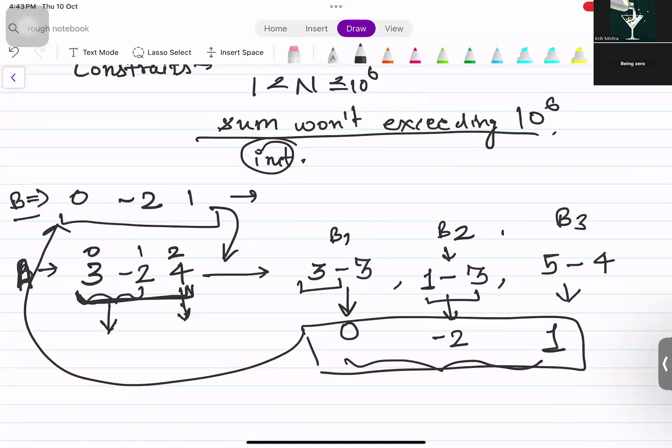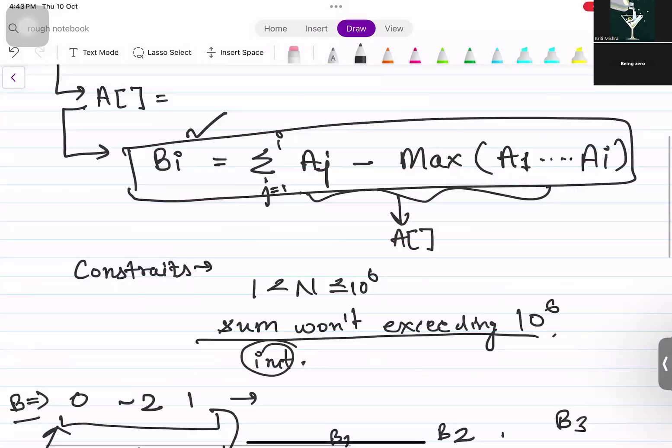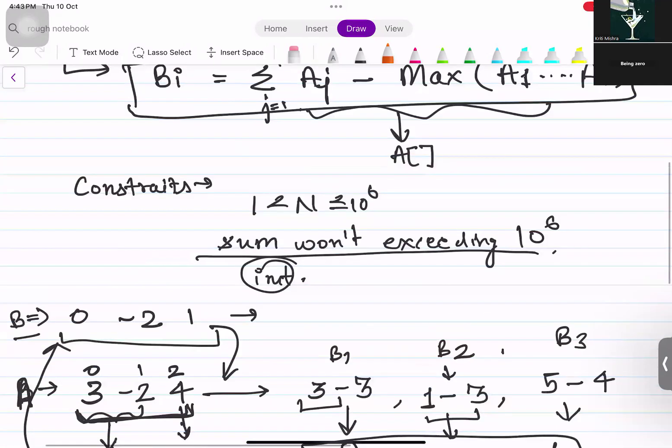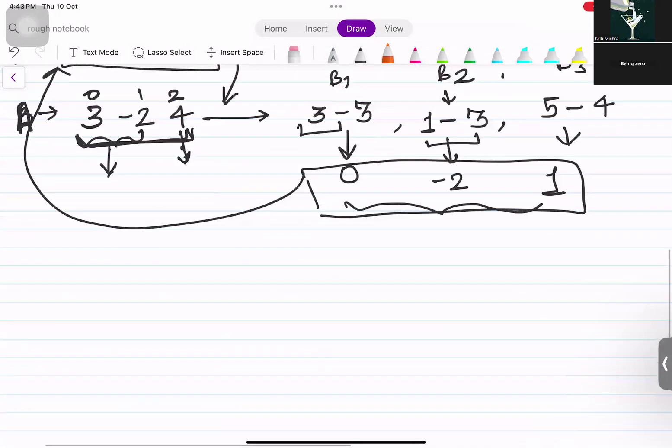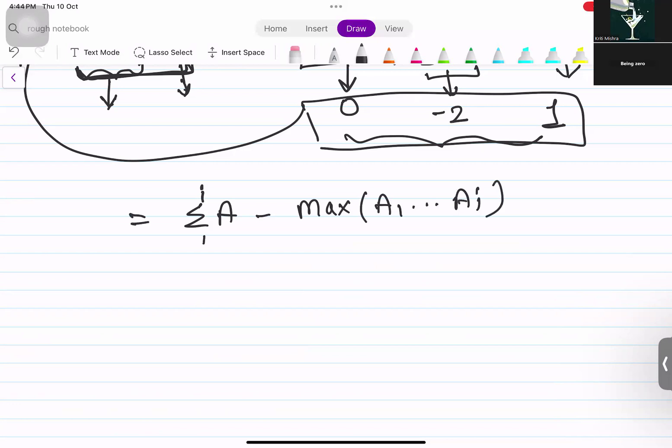Now, the main question which arises is that we need to generate array A. We need to generate A using this formula. How can we do that? Let me write that formula once again. Summation of elements from 1 till i minus maximum of 1 till i. This is B of i. How can we get A if B is given to us?